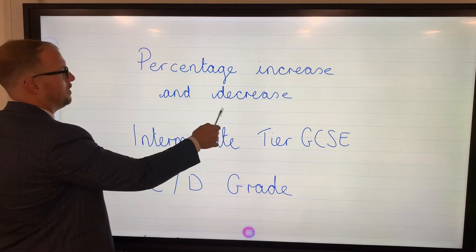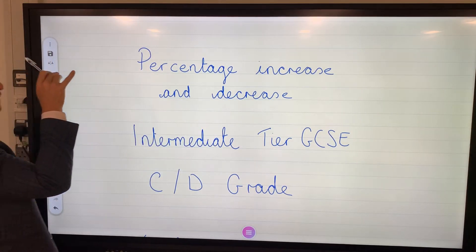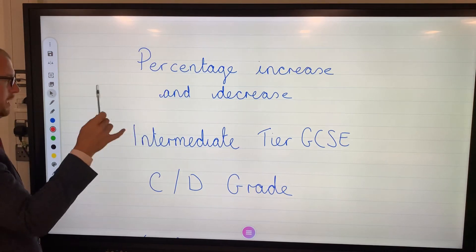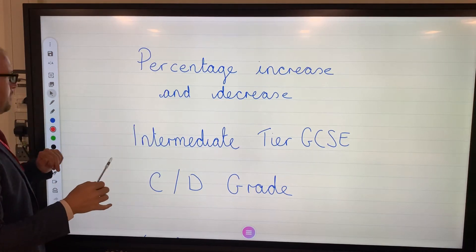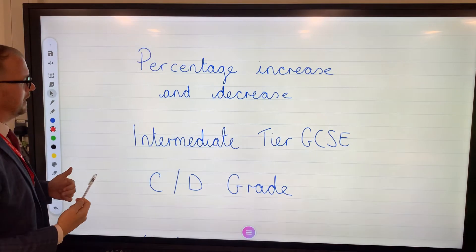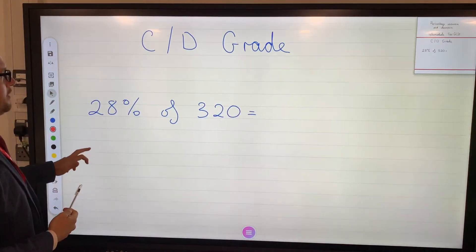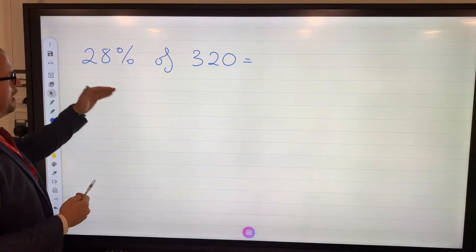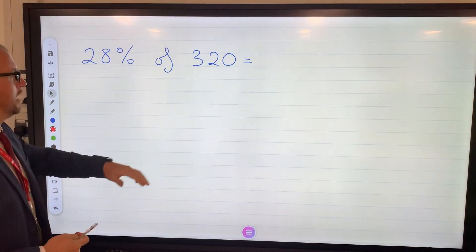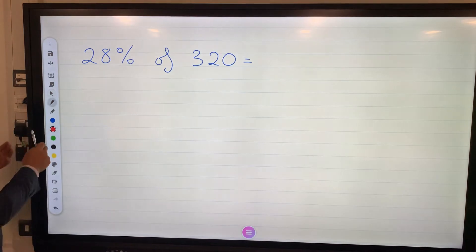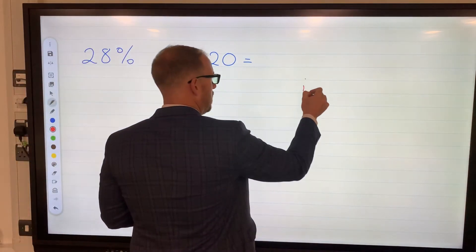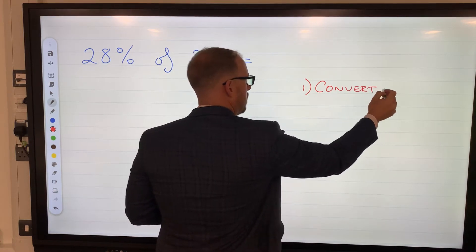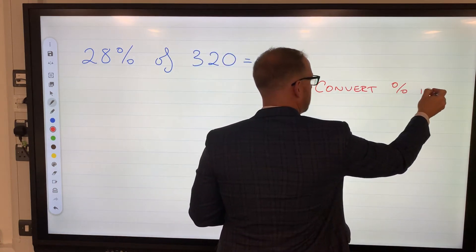Okay, so percentage increase and decrease. In order to be able to increase and decrease, we need to be able to find out the percentage of a quantity using a calculator using a method that we call the multiplier method. So just as a recap then, we need 28% of 320.